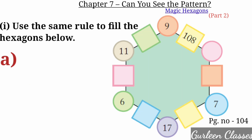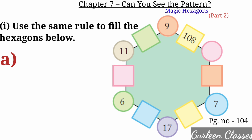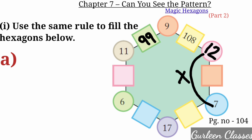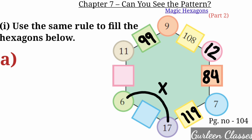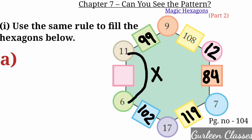Use the same rule to fill the hexagons below. Part A: 11 times 9 is 99. Then 9 times 12 is 108. Then 12 times 7 is 84. Then 7 times 17 is 119. Then 17 times 6 is 102. Then 6 times 11 is 66.